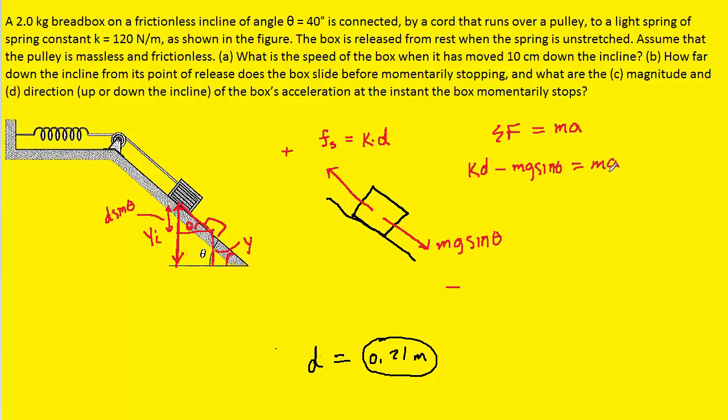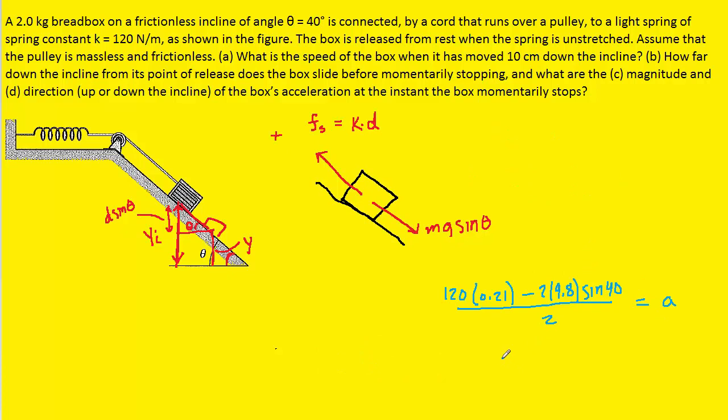We'll divide both sides by the mass m so that we can isolate a. We could then plug in the known value for k. Remember, d was the 0.21 that we had found in the previous part. Then we have mass, the angle, and then g. When we plug in all those values, we're going to get an acceleration of 6.3 meters per second squared. We'll notice that it came out positive, so that means the acceleration is pointing in the positive direction, which we called up the ramp. Therefore, the acceleration will be directed up the incline and its magnitude will be 6.3 meters per second squared.